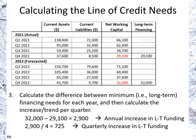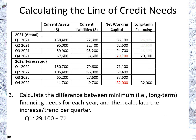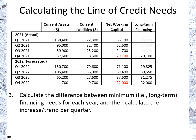In real life, things will happen more opportunistically and you're not going to necessarily have a quarterly increase of $725 every quarter — there may be an opportunistic funding for a larger sum. But this is the theoretical approach, consistent with the idea of long-term and short-term financing. For Q1 of the coming year, we increase $29,100 by $725 to get $29,825. Then Q2 becomes $30,550, Q3 becomes $31,275, and Q4, adding another $725, comes to exactly $32,000.